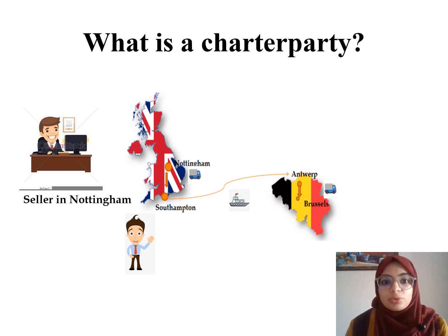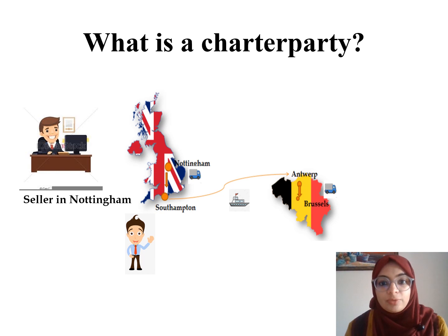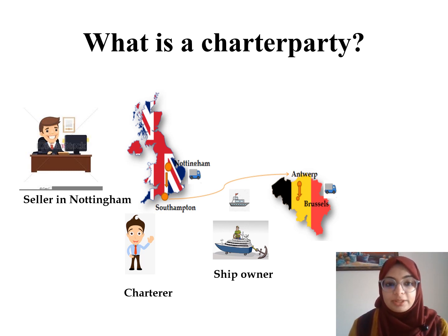This seller, who is also the shipper, will have to find a ship owner to transport the goods from Southampton to Antwerp. The ship owner carries the goods in return for a certain sum of money known as freight. The ship owner and the shipper are both governed by the contract of carriage. The ship owner will issue a bill of lading to the shipper — we have an entire module on bill of lading coming next.